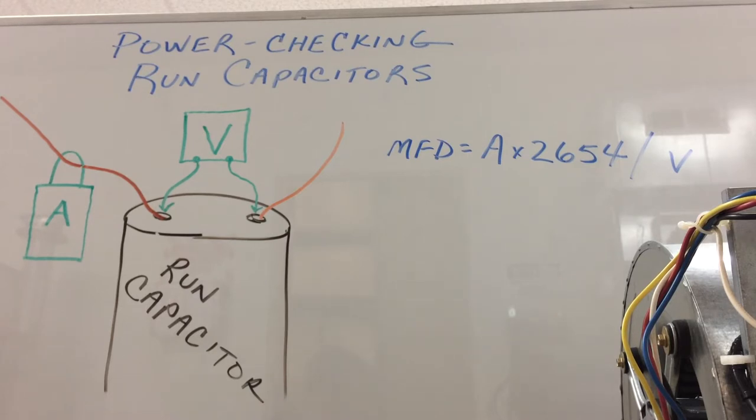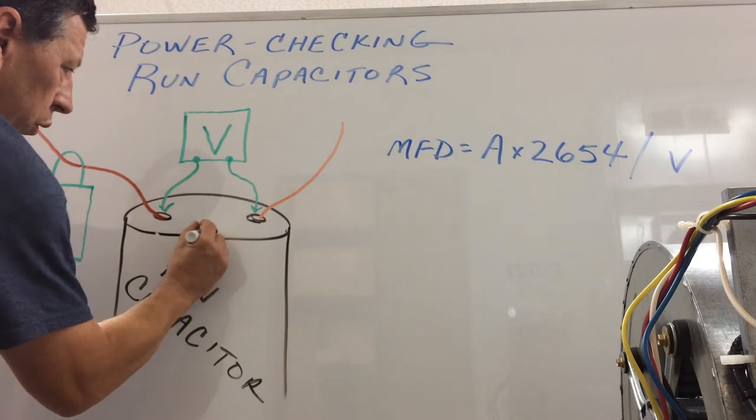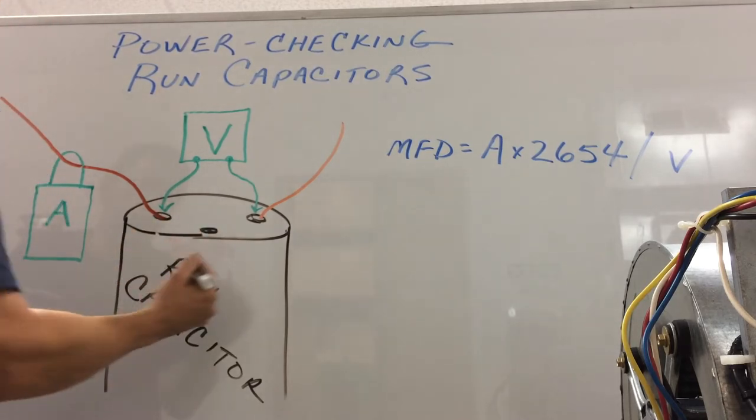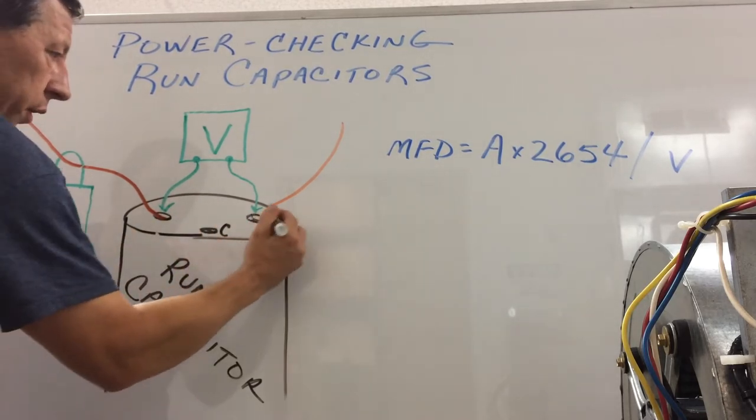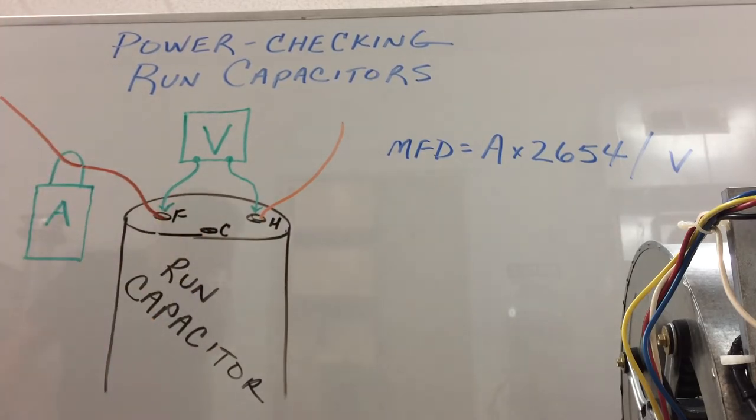Second thing is, some of the capacitors you see out there are dual capacitors, which means we're going to have another terminal, and for instance, we're now going to have a common, a herm, and a fan terminal. So, the way I've got this drawn on the board now for a dual capacitor essentially is checking the fan side.